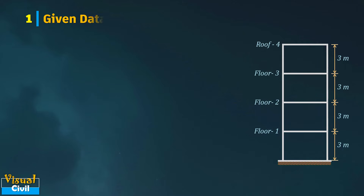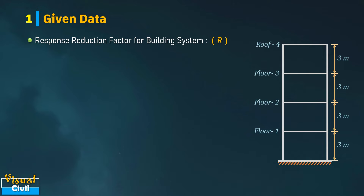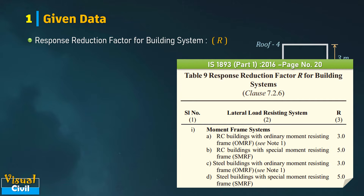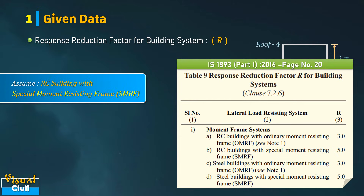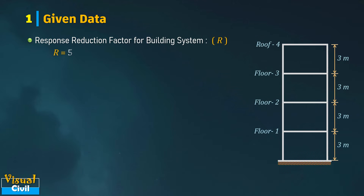In the first step, let us find some basic data required for the computation. Firstly, let us find the response reduction factor R for the building system. Table 9 of IS 1893 suggests the value of R for different lateral load resisting systems. Assuming the building has a special moment resisting frame, the value of R is 5 for an RC building with special moment resisting frame.